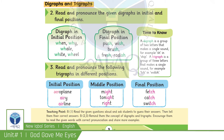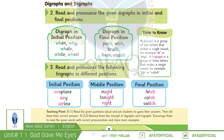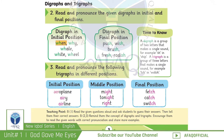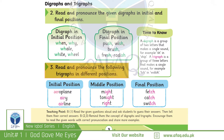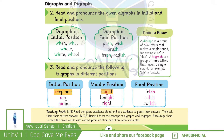اب ہم digraphs اور trigraphs کے بارے میں سیکھتے ہیں۔ But first of all, we need to know what are digraphs and trigraphs. Digraphs دو letters کا ایک ایسا group ہوتا ہے جو single sound produce کرتا ہے، جیسے 'when' میں WH، 'wish' میں SH۔ اسی طرح trigraphs تین letters کا ایک ایسا group ہوتا ہے جو single sound produce کرتا ہے، جیسے 'aeroplane' میں AIR (A-E-R)، 'might' میں IGH، یا 'fetch' میں TCH۔